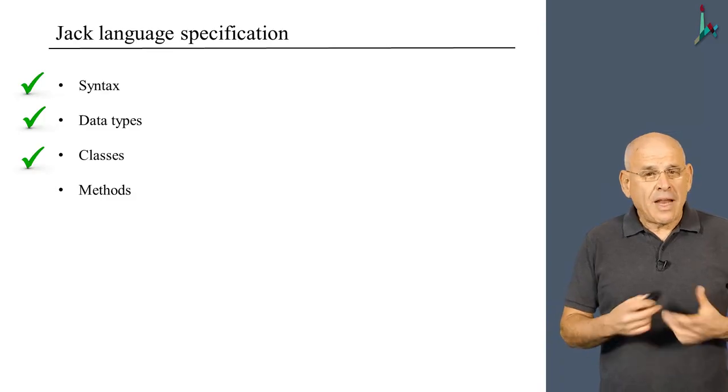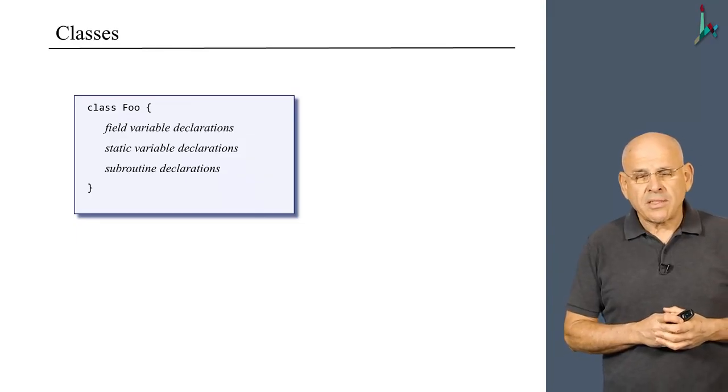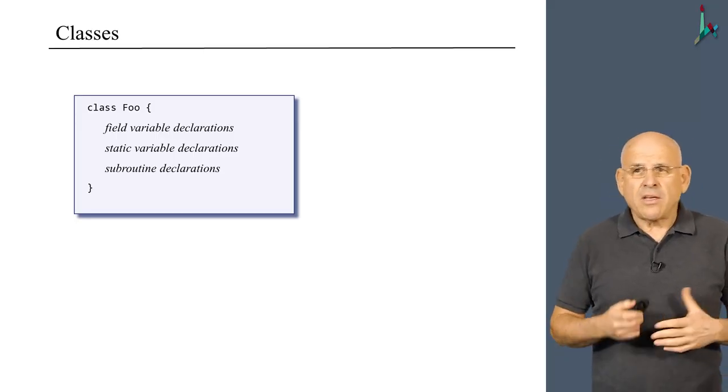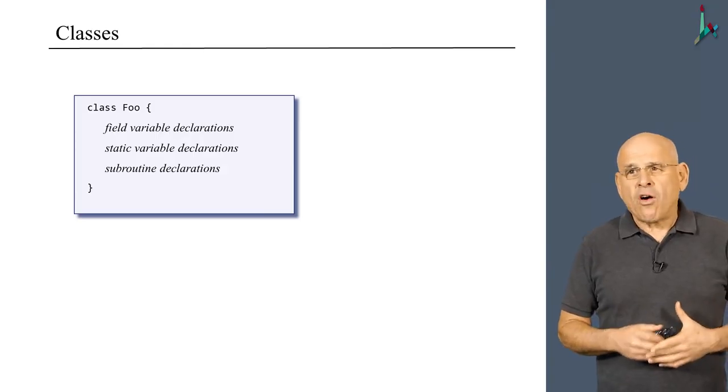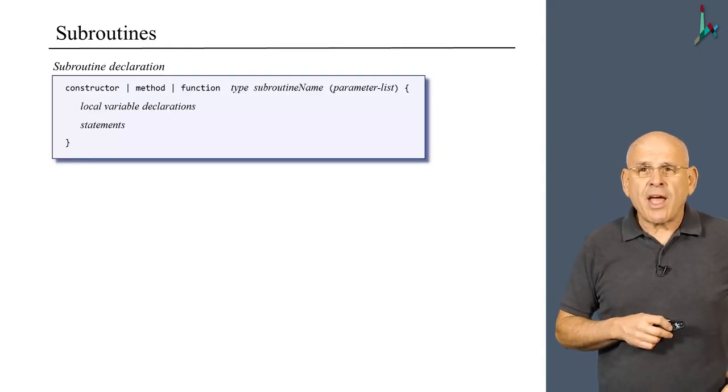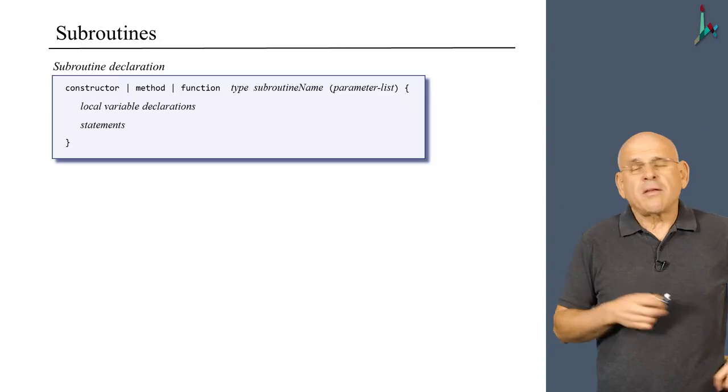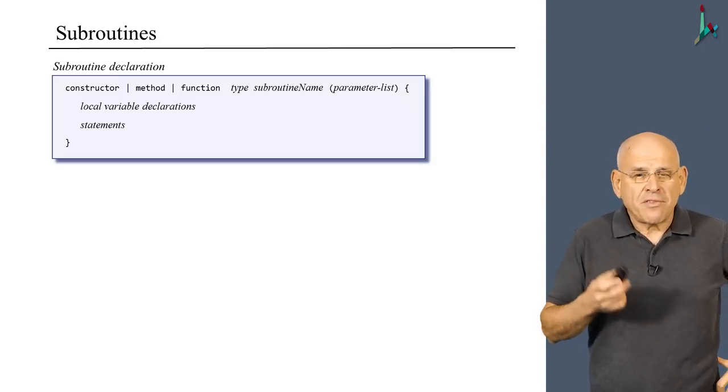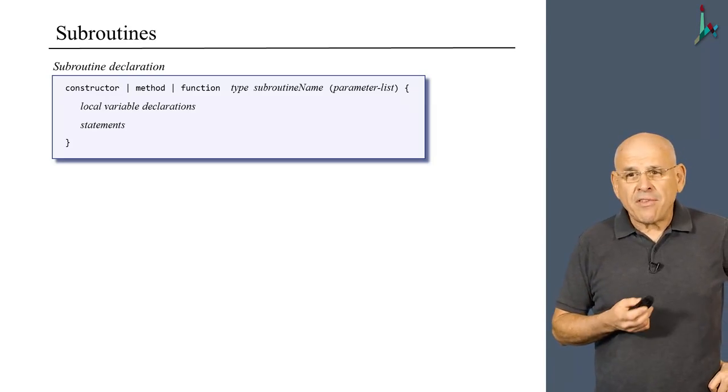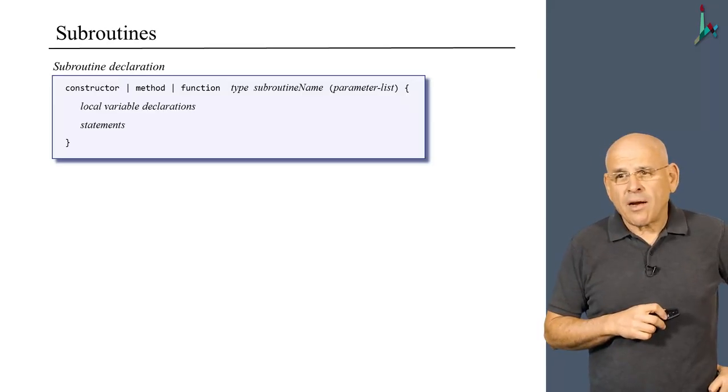In the last unit, we talked about classes and mentioned that they end with subroutine declarations. These subroutines are either constructors, methods, or functions. They all have exactly the same declaration syntax. Subroutines in Jack is a conceptual name that describes the three kinds of methods the language supports. They have different purposes but exactly the same declaration syntax.